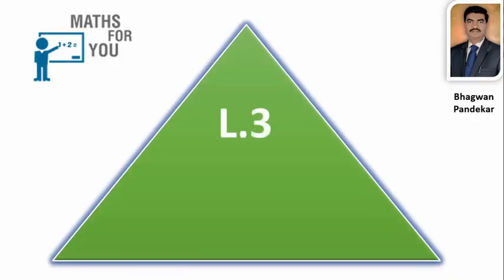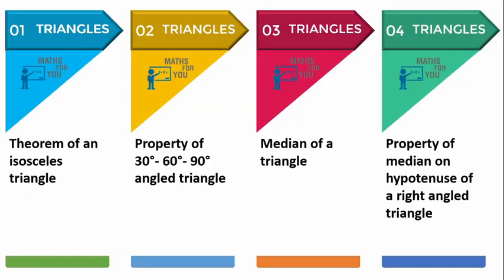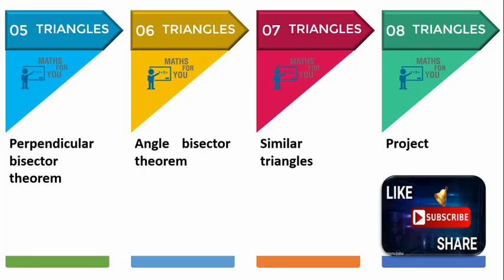Summary, Lesson number 3: Triangles. In this lesson there are some subtopics: 1. Theorem of an isosceles triangle. 2. Property of 30-60-90 degree angle triangle. 3. Median of a triangle. 4. Property of median on hypotenuse of a right angle triangle. 5. Perpendicular bisector theorem. 6. Angle bisector theorem. 7. Similar triangle. And 8 is project. So these are the subtopics in this chapter.